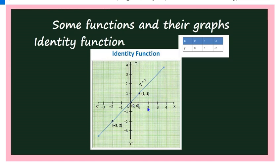Mark unit distances: 1, 2, 3, 4 to the right and −1, −2, −3 to the left on the x-axis; 1, 2, 3, 4 above and −1, −2, −3 below on the y-axis. When x = 0, y = 0, giving point (0, 0). When x = 1, y = 1, giving point (1, 1). When x = −2, y = −2, giving point (−2, −2). Joining these points gives a straight line — that is the graph of y = x.